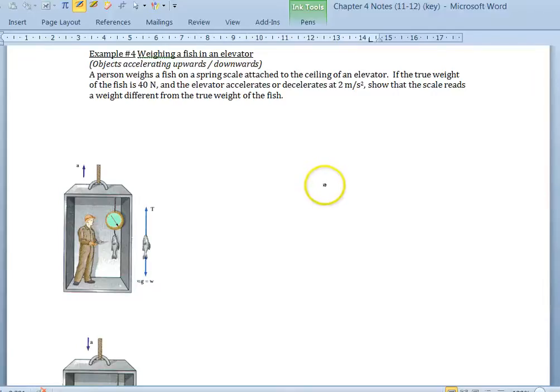Welcome to example four. This is an example of a fish being weighed in an elevator. There's a string attached to the scale with the fish hanging below it, and the scale is reading the apparent weight of the fish. The question is asking for the tension, which is the apparent weight of the fish. In part A, we have a fish accelerating upwards in an elevator, and part B is an example of the fish being decelerated downwards.